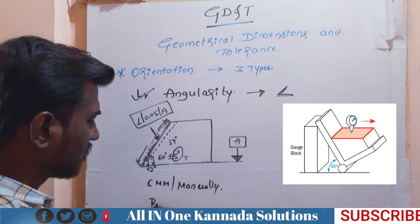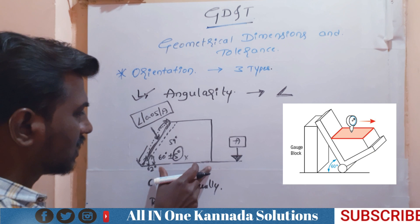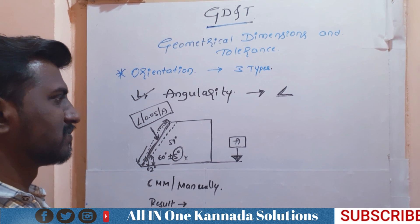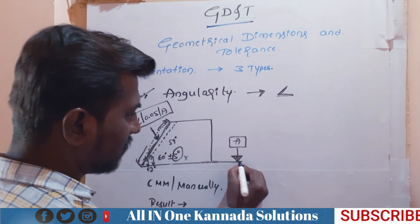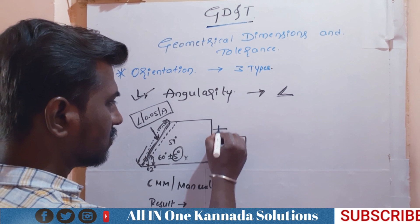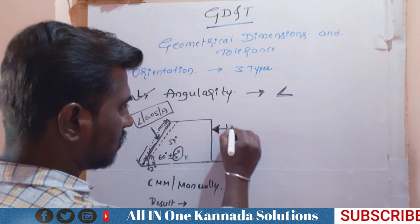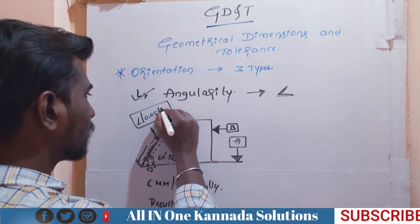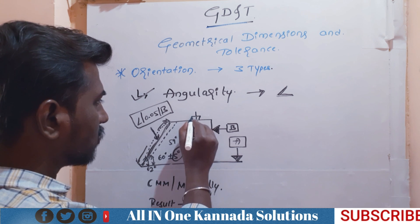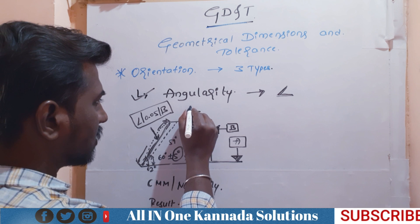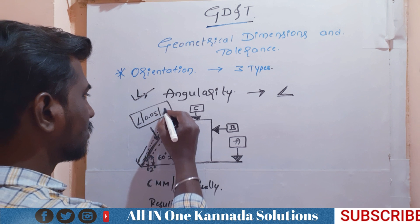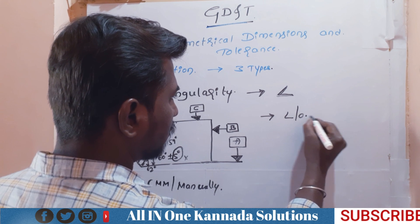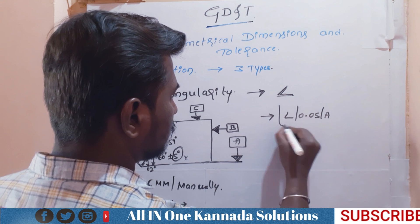I am going to show you an example. Datum A and C are as follows. I will change datum A and C. So the functional requirement is 50 micron — 50 micron is required with respect to datum A.